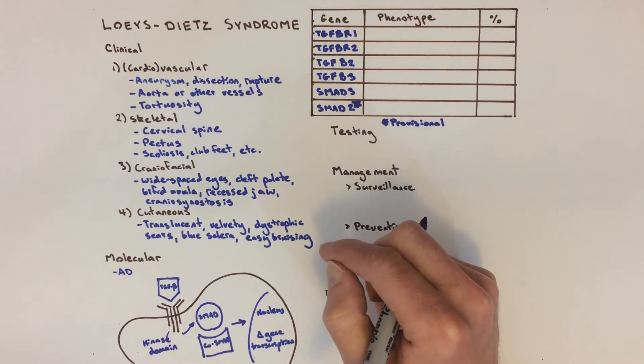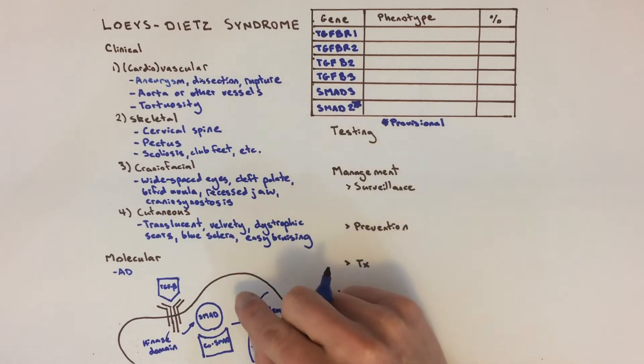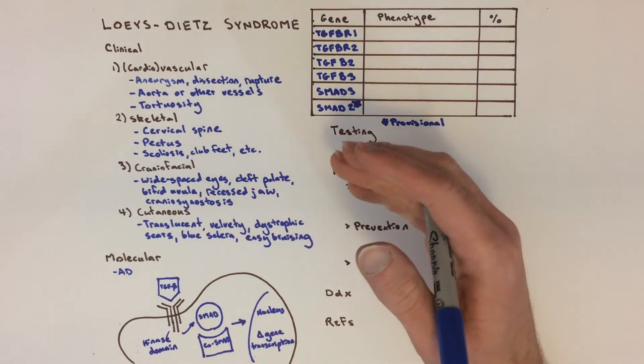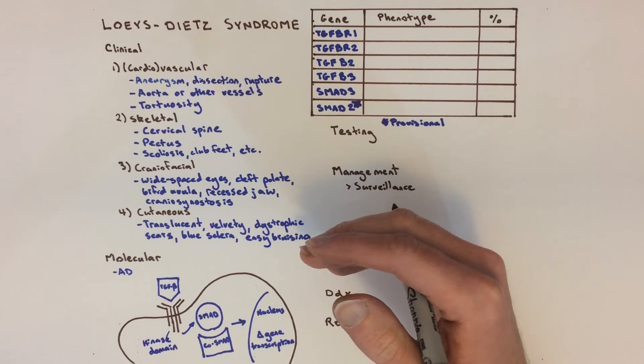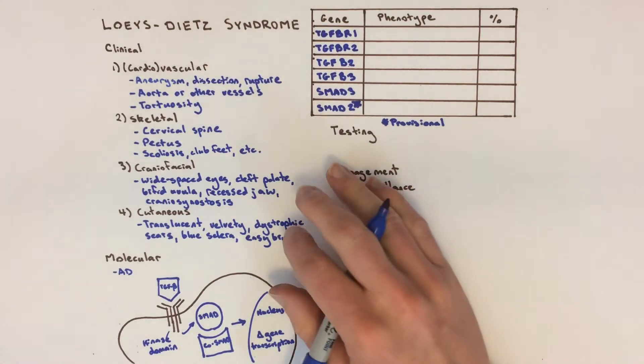In the aortic tissue, these mutations lead to loss and disruption of elastic fibers, which compromises the normal stretch and robustness of the tissue, and collagen accumulates in the media, or middle part, of the aortic wall.